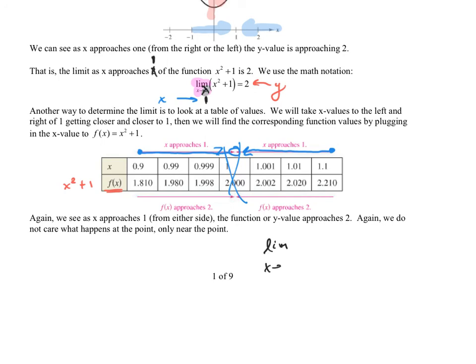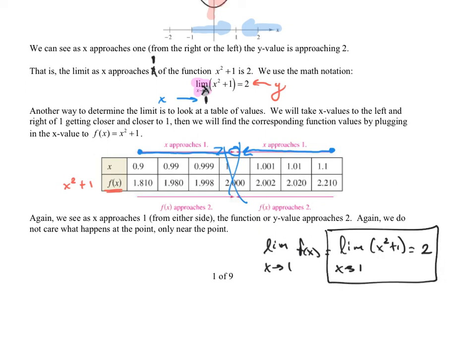So we write: the limit as X approaches 1 of x² + 1 equals 2. The X value approached 1 in the table, and the Y value approached 2. That's all a limit is — as I get closer and closer to a given X value, what's happening to my Y value? That's the core concept of a limit.